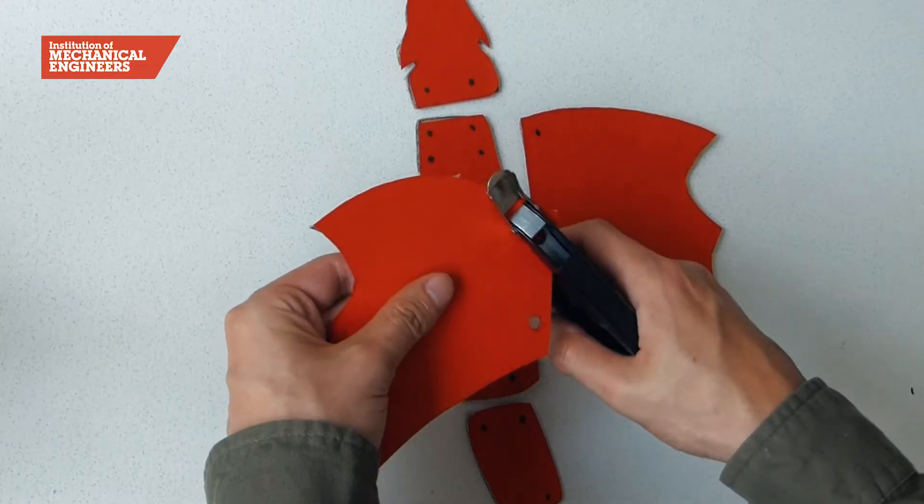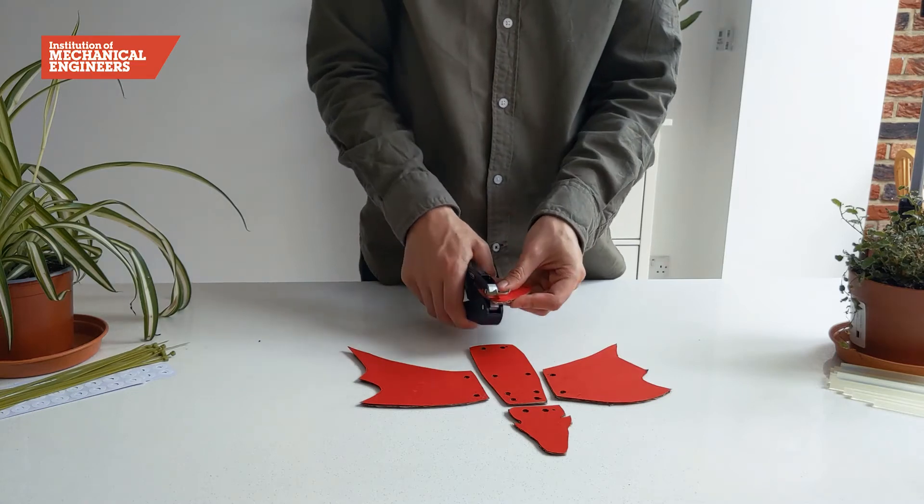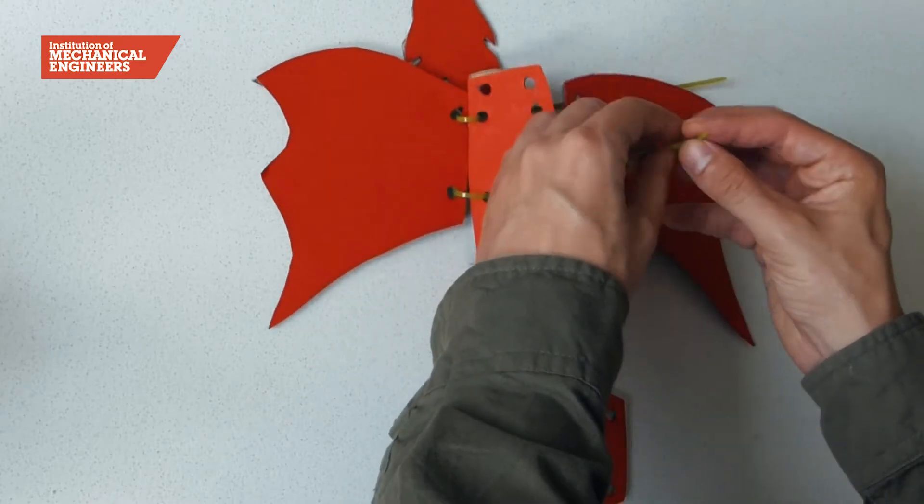Create holes in the separate parts of the dragon and then use zip ties to connect them together. See the diagram at the bottom of this document to see where to place the holes.